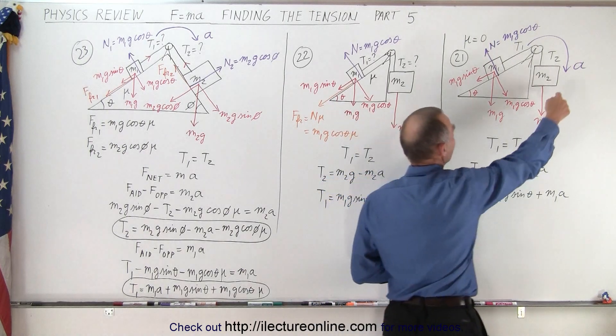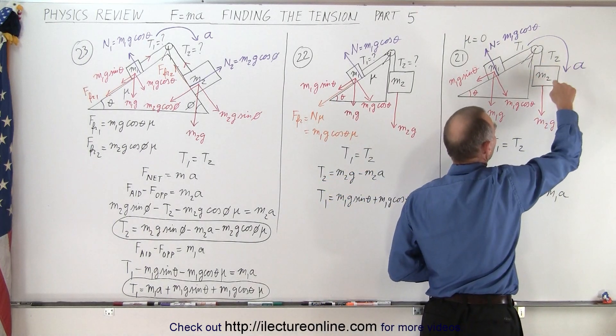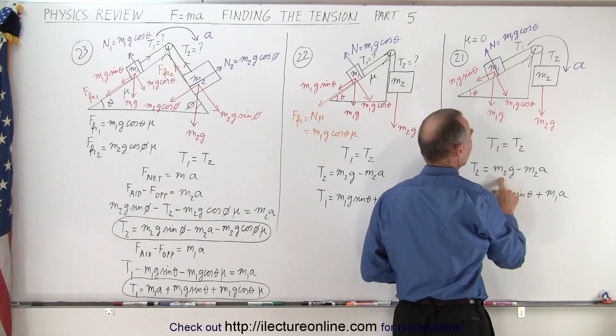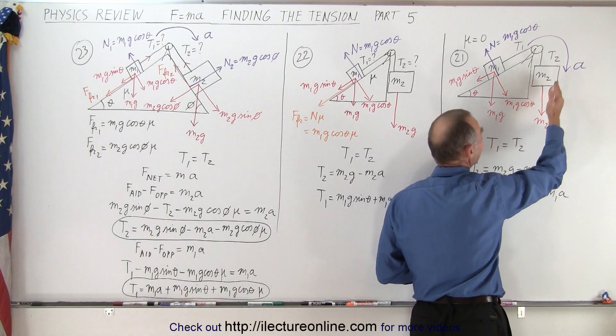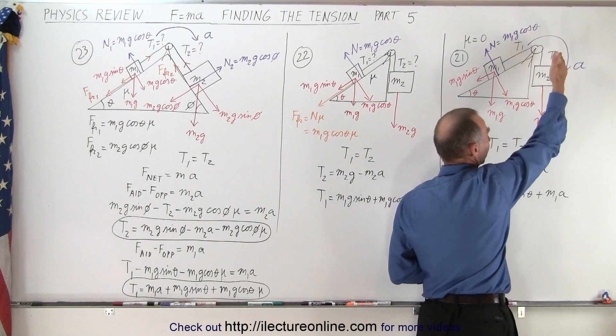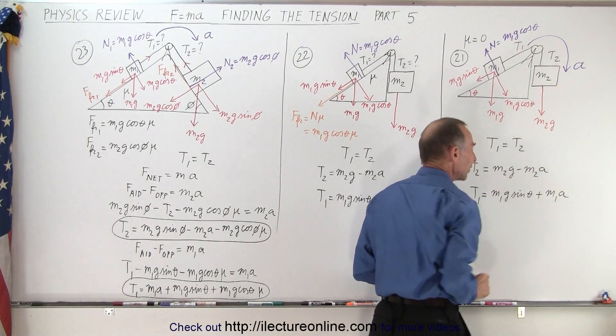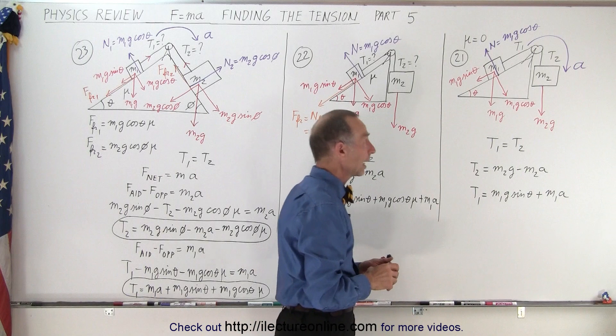And so you can see that tension 2 can be found by isolating M2. It's simply going to equal M2G minus M2 times A, because it is actually accelerating downward which takes some of the tension of the string holding M2.